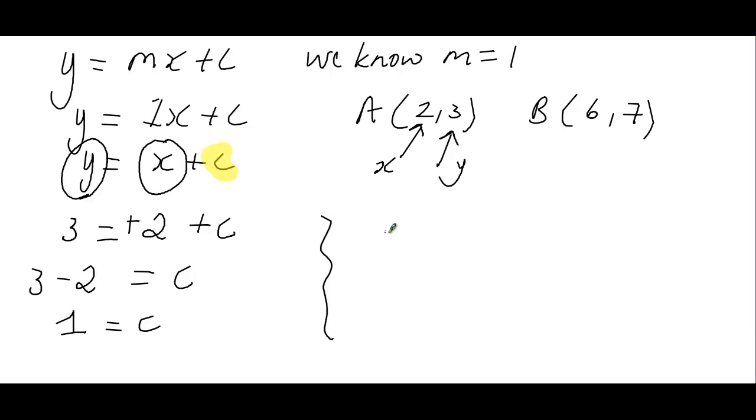So in the end we can say that my equation is y equals x plus c. We found that c was equal to 1 so it's x plus 1. And that's it. This is how you find the equation of a straight line between two points.